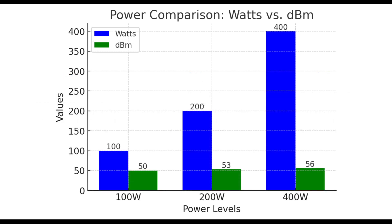Here's a chart that helps highlight the difference. We have 100 watts, 200 watts, and 400 watt power levels. You can see by the blue bars that with each doubling of power, the size of the bar doubles — and this becomes unmanageable quickly. If you take a look at the green bars, they represent dBm. The first one is 50, then it goes to 53, and then to 56. By using the logarithmic dB scale, we only go up by 6 when we go up by 300 with increases in power measured in watts.